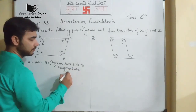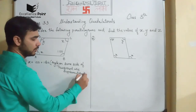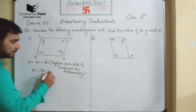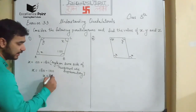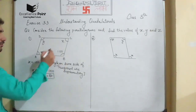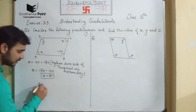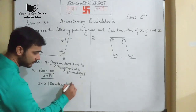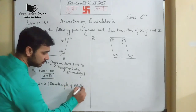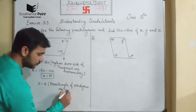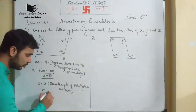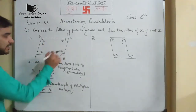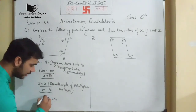By using this property, the value of X will be equal to 180 minus 100, so X is equal to 80 degrees. Now for finding the value of Z, angle Z is equal to angle X because opposite angles of a parallelogram are equal, so Z is also 80 degrees. And you can say that Y is equal to 100 degrees because opposite angles of a parallelogram are equal.